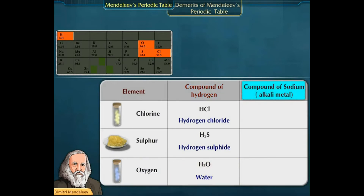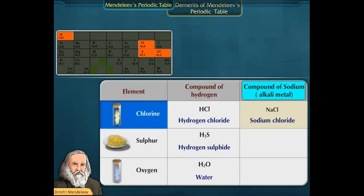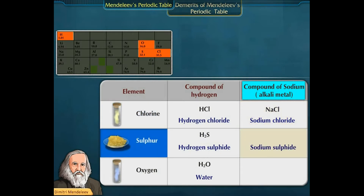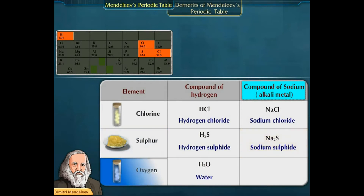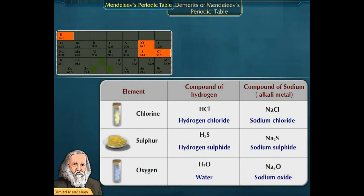Considering the compounds of an alkali metal, Sodium, the formulae of compounds formed by Hydrogen and those formed by Sodium are similar, as both Hydrogen and Sodium have valency 1.